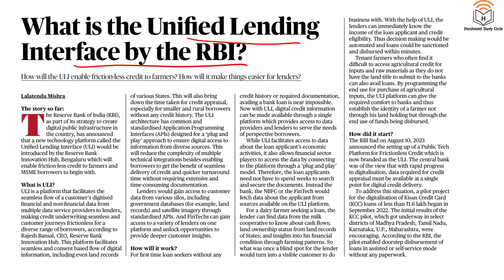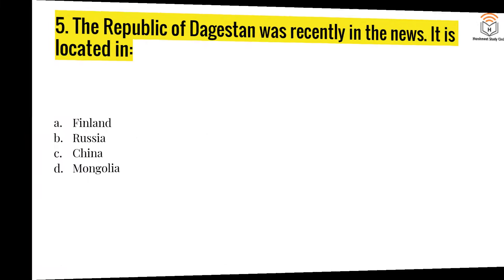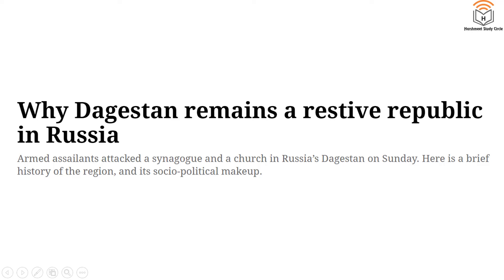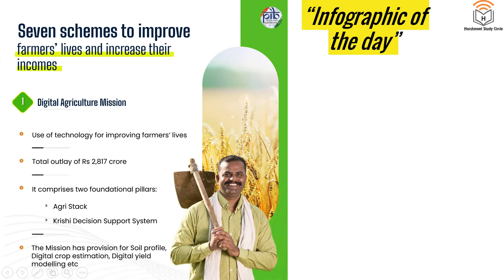Next question, number five: the Republic of Dagestan was recently in the news — is it located in Finland, Russia, China, or Mongolia? The answer is B — Russia. Dagestan is a majority Muslim population region at the southern tip of Russia; it has been seeing militancy for a long time. There are various demands from the people of this region that the Russian government is not adhering to, leading to protests against the Russian government and armed forces. It was covered in the Indian Express in the article 'Why Dagestan Remains a Restive Republic in Russia.'